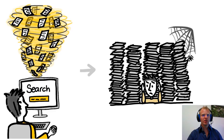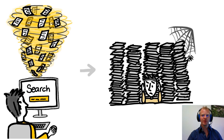Consider the use case of a researcher who wants to publish a systematic search. The person searches for relevant papers in the database and finds thousands of hits. All these papers have to be screened for relevance, and typically 40 abstracts can be screened per hour.